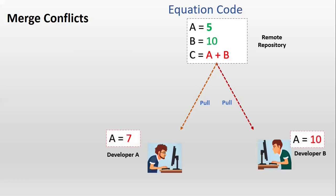Developer A updated the A value to 7, whereas developer B updated the A value to 10 in their local development branch. Once they completed their development in the local branch, developer A merged his local development branch changes with local master. Then he pushed his changes to the remote branch.